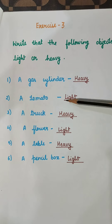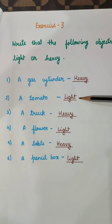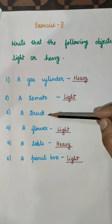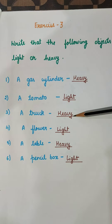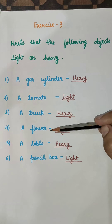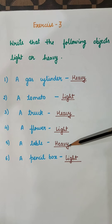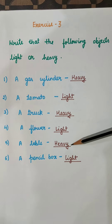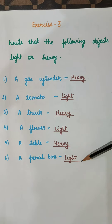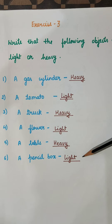A tomato is light. A truck is heavy. A flower is light. A table is heavy and a pencil box is light.